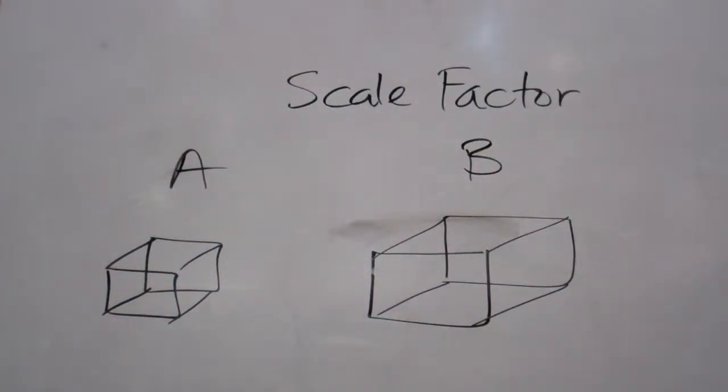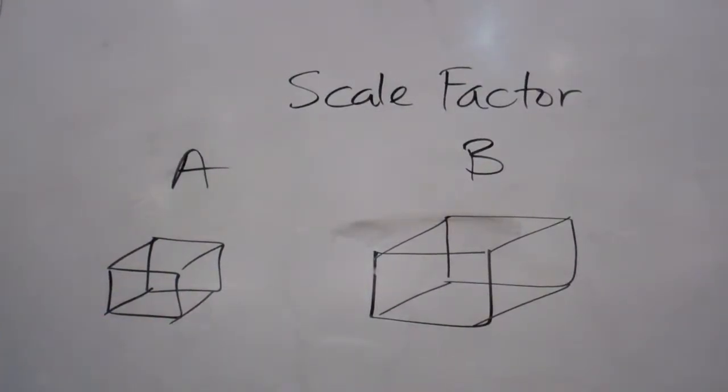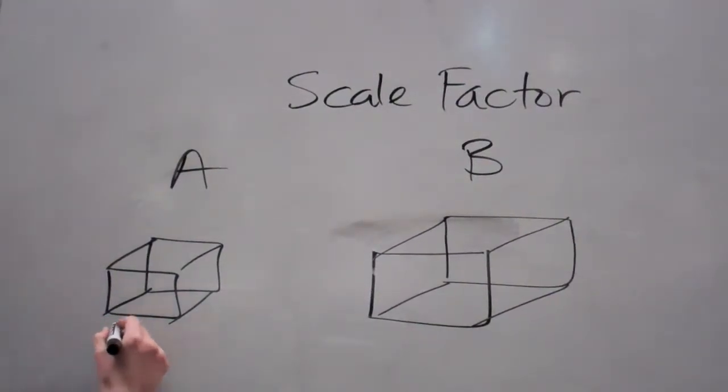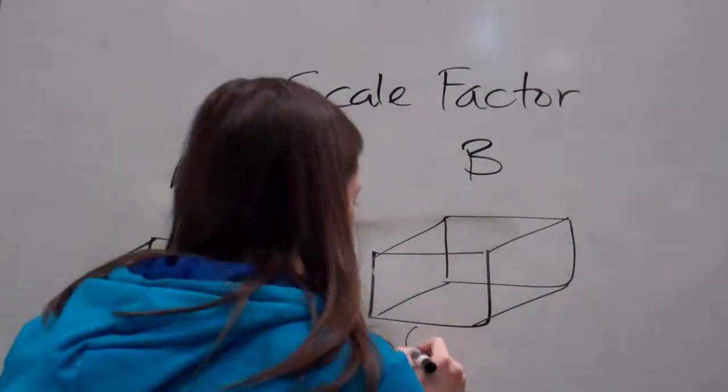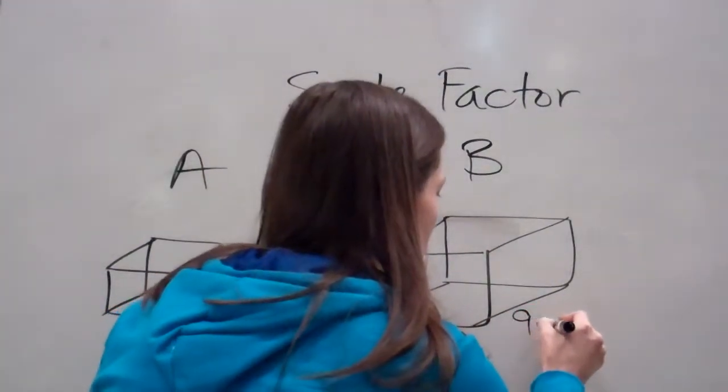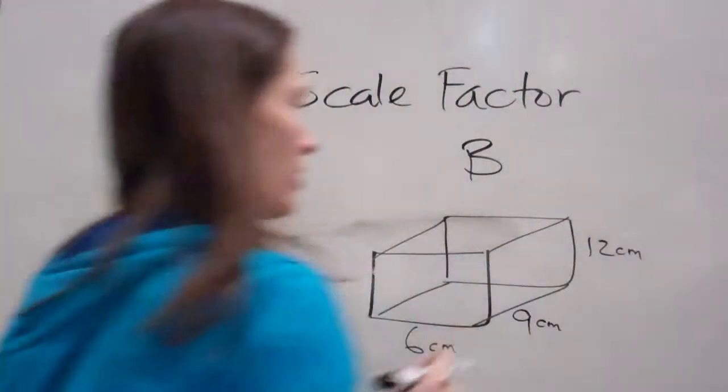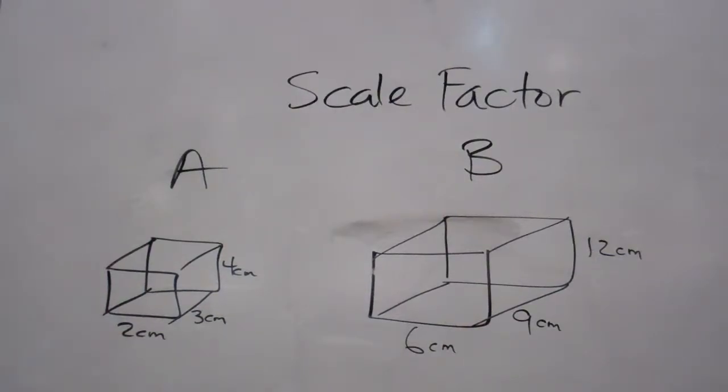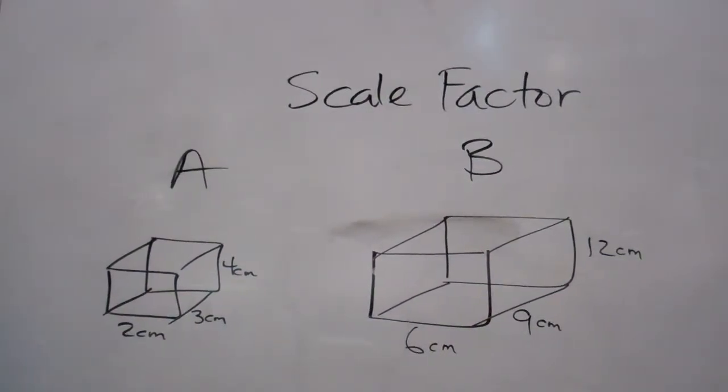So, write as fast as you can. The smaller, the small one's dimensions are two centimeters by three centimeters by four centimeters. Two by three by four. My big one is six centimeters by nine centimeters by 12 centimeters.